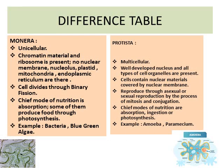Now we look at the difference table between Monera and Protista. Monera is the kingdom of the super kingdom Prokaryota, while Protista is a kingdom under the super kingdom Eukaryota. Here is a picture of blue-green algae representing Monera, and a picture of amoeba representing Protista.